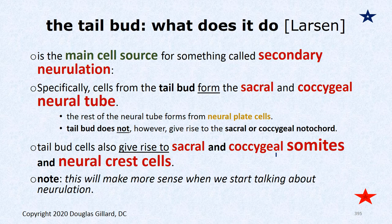Neural crest cells are magical — they make so many different things. Melanocytes that give your skin color are derived from neural crest cells. They look like little octopuses underneath your skin and are amazing migrating cells that we'll talk about soon.